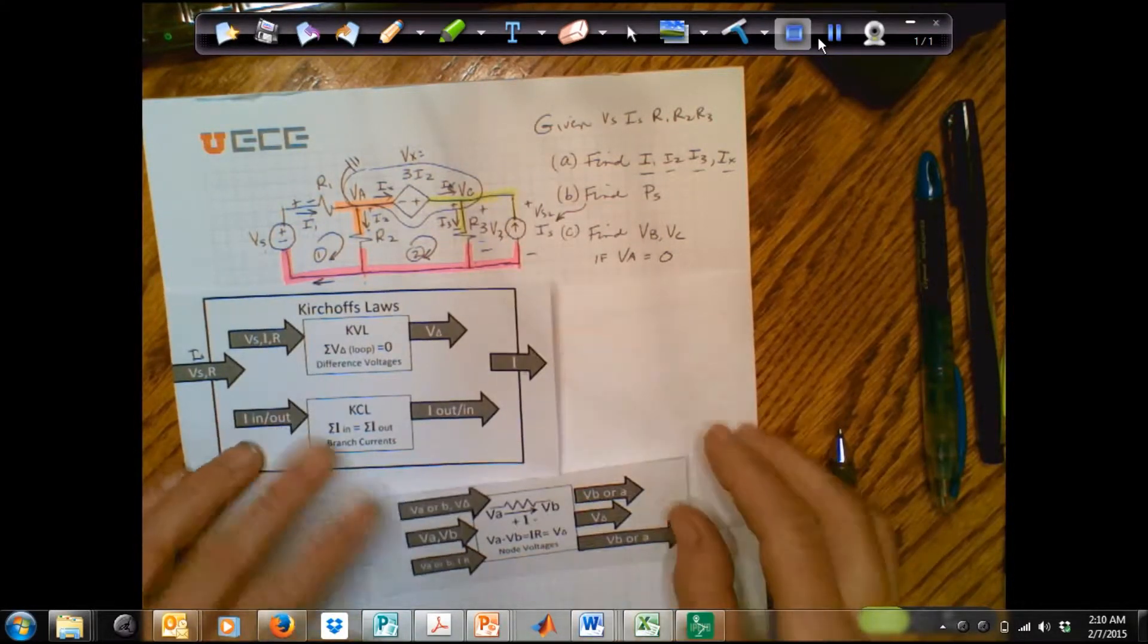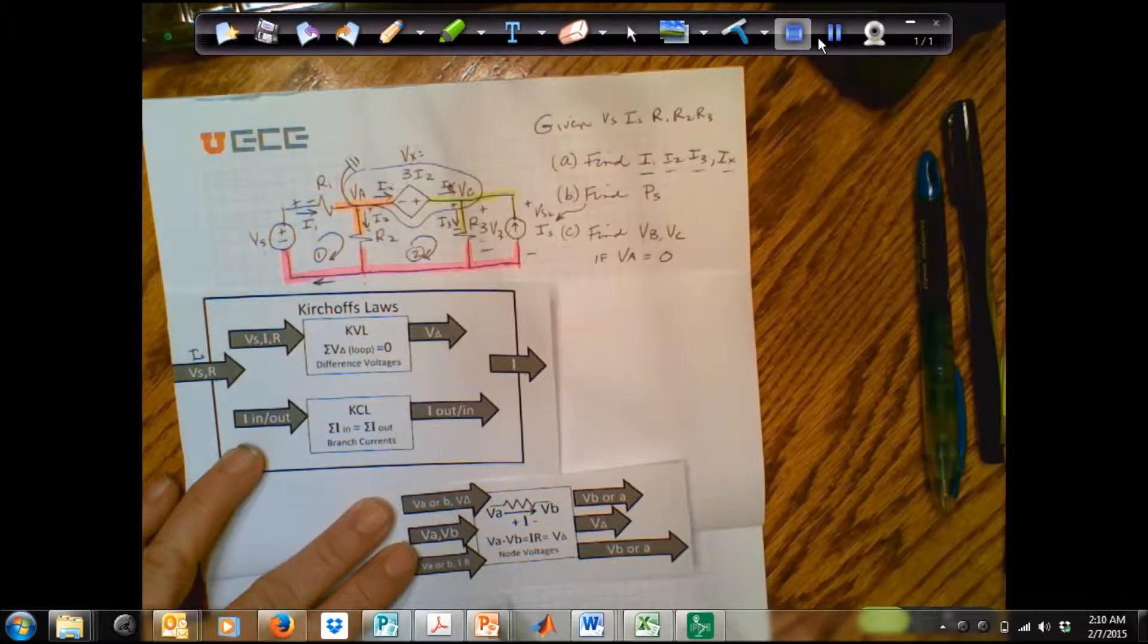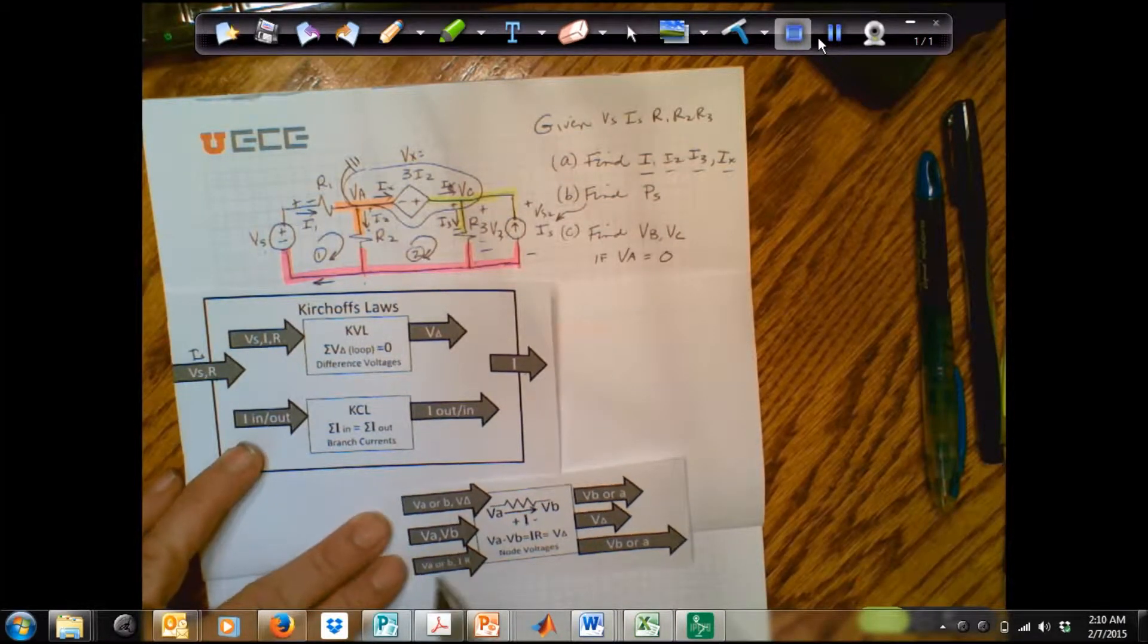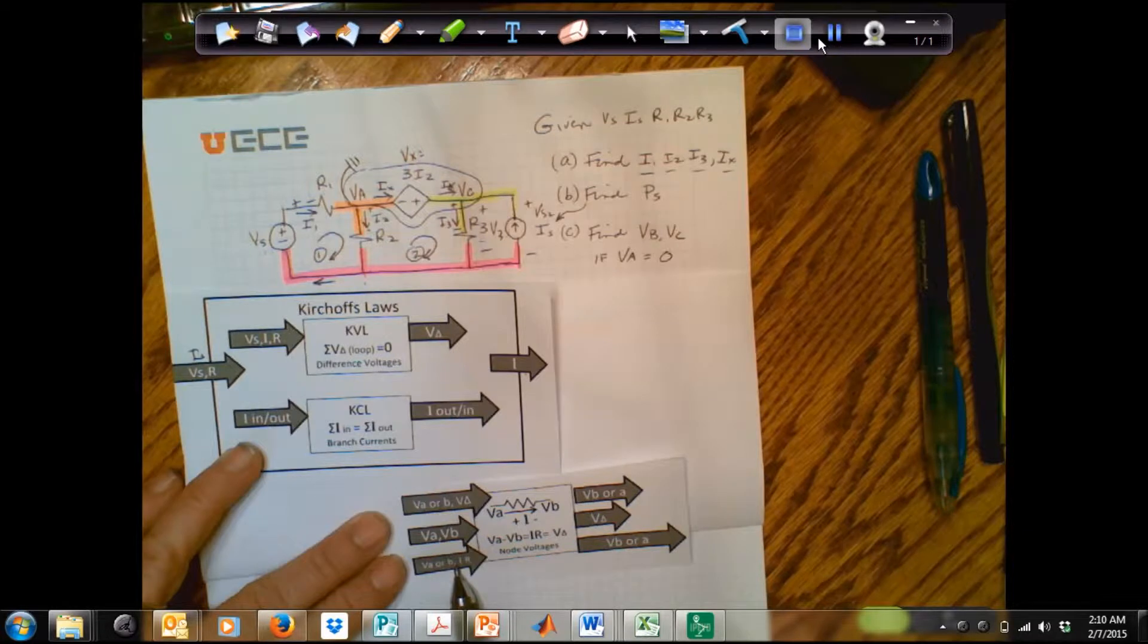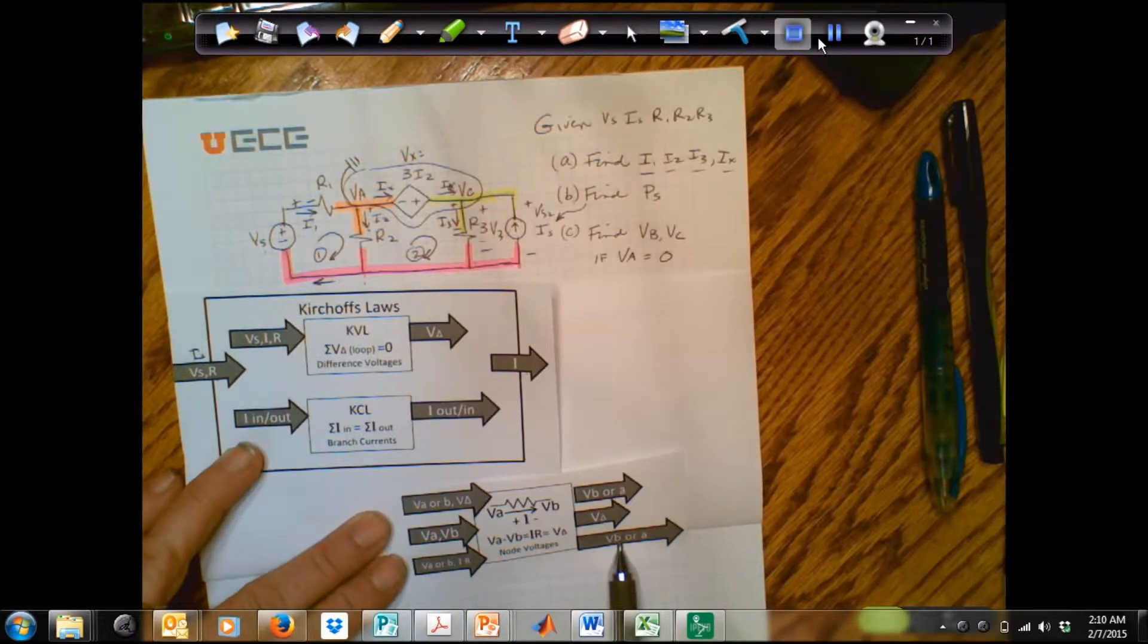If I have Kirchhoff's Law and I found current, that means I know current. Here I know current, and I know one of the nodes. If I know one of the nodes, and the currents, and the resistances, I can find the other nodes. So let's see how to do that.